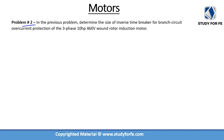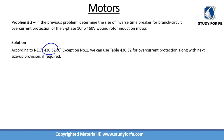Problem number 2 builds upon the previous problem and asks us to determine the size of an inverse time breaker for branch circuit overcurrent protection of the 10 horsepower motor. Section 430.52 deals with branch circuit overcurrent protection, and 430.52(C) exception number 1 allows us to use table 430.52, which tells us what percentage to apply to the FLC. If that value is not a standard device rating, we can go to the next size up.